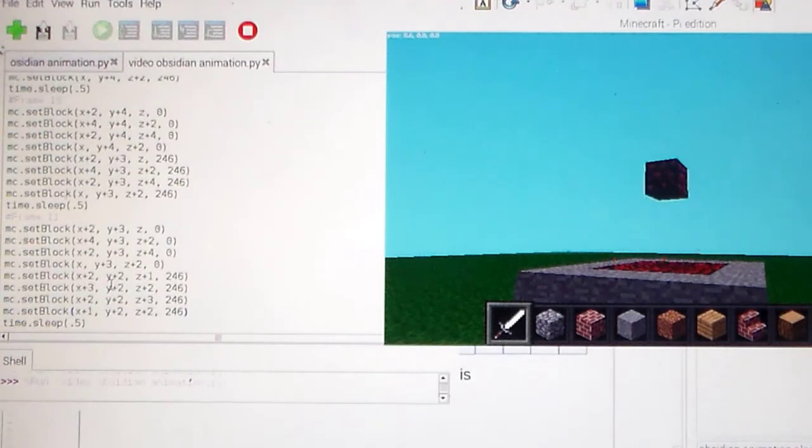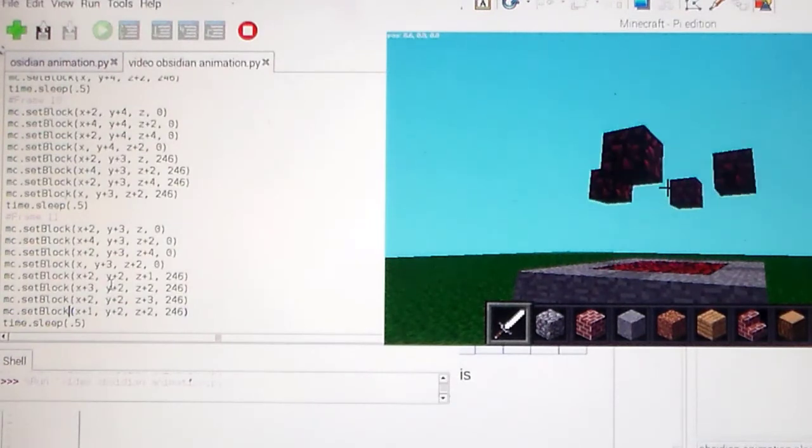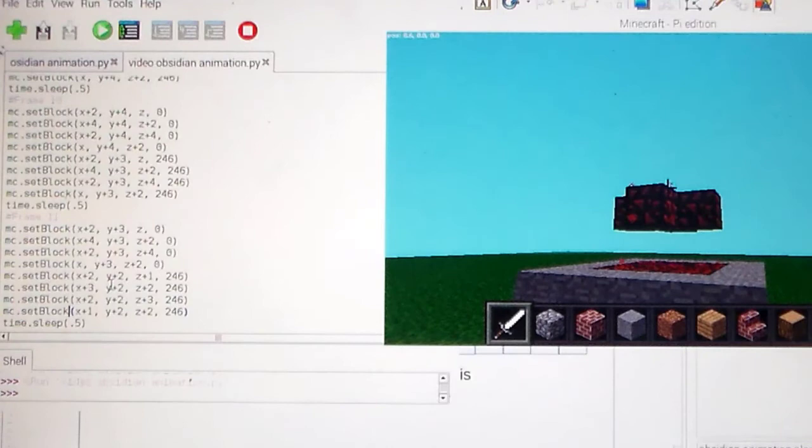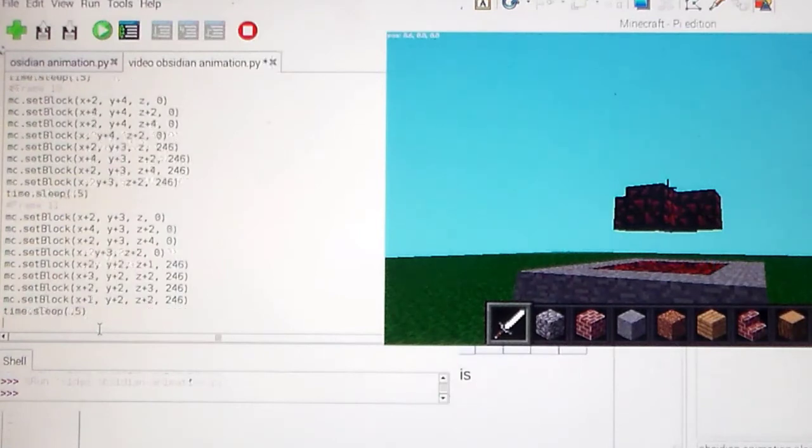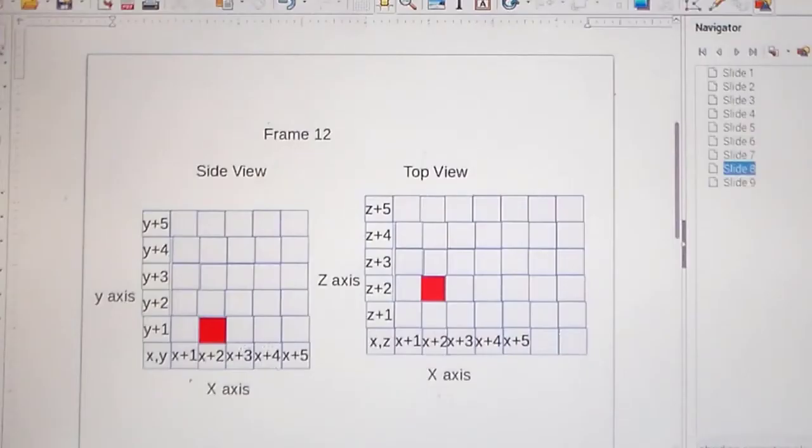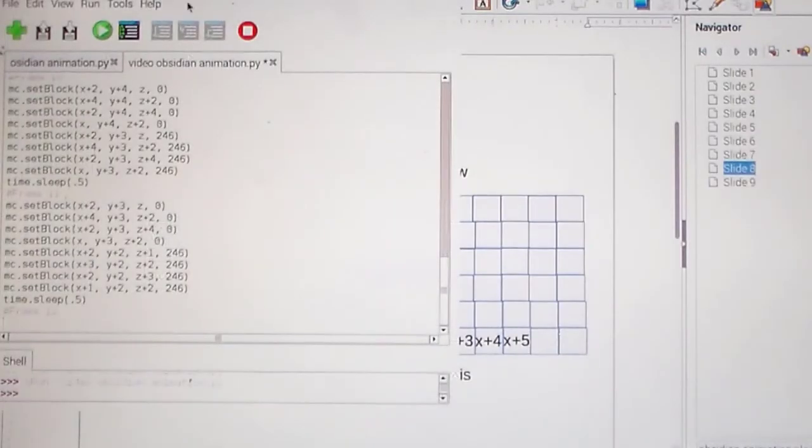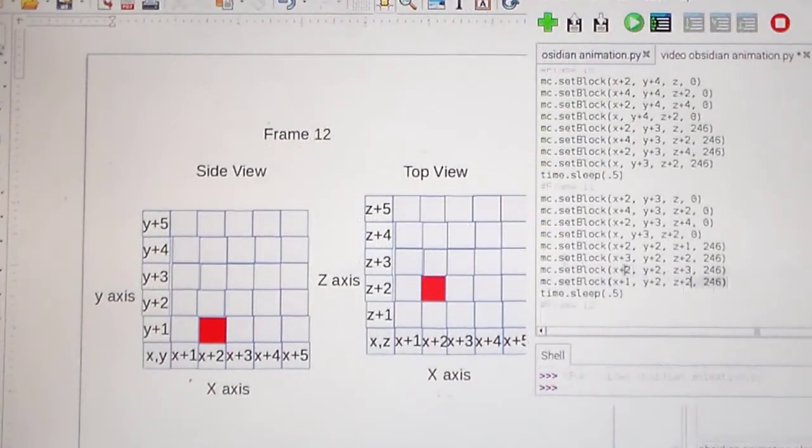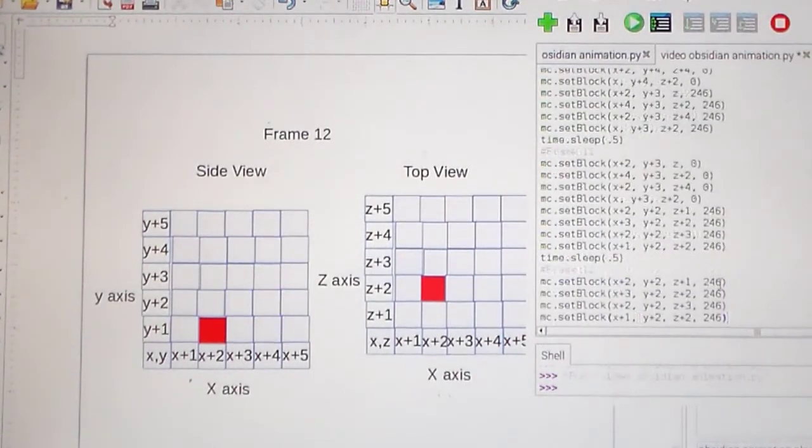And now I should run it. And it comes up, spreads out, and then comes in. Perfect. That's what I was hoping for. Now we just have two quick frames and we are done with the main code of this. So in frame 12, we're going to take just one block. But first we have to get rid of all of the blocks from our previous frame. So let's turn all those to air.